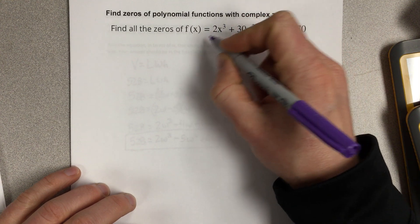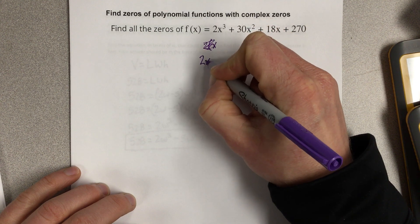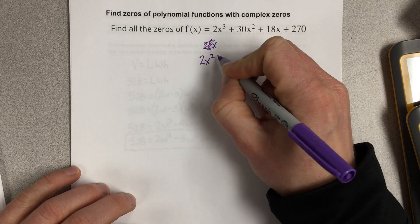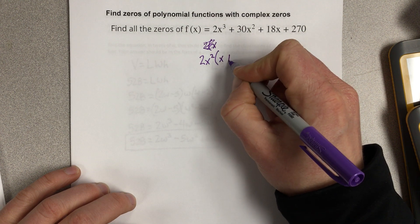So let's group the first two together. Factor a 2 out. Let's actually factor 2x out, 2x squared, and that would be x plus 15.